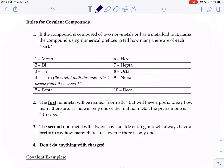Covalent compounds, remember, are nonmetals only, maybe a metalloid perhaps. So if the compound is made up of two nonmetals or has that metalloid in it, we're going to name the compound using numerical prefixes to tell how many there are of each part.